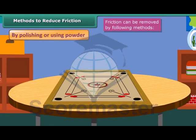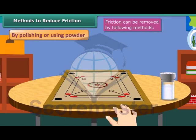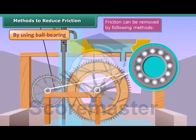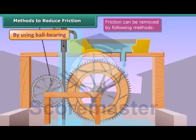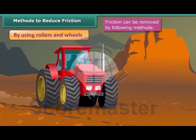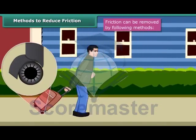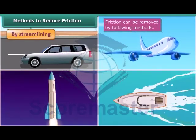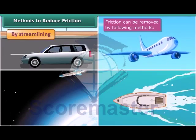Friction can be reduced by the following methods: By polishing or using powder — we can smooth rough surfaces by polishing or using powder, which reduces friction. By using ball bearings — ball bearings are hollow circular devices containing small metal balls fitted around the moving part of a machine, converting sliding friction into rolling friction. By using rollers and wheels — heavy objects are provided with small wheels called rollers to reduce friction. By streamlining — the bodies of cars, aeroplanes, rockets, boats and ships are streamlined to reduce air and water friction.